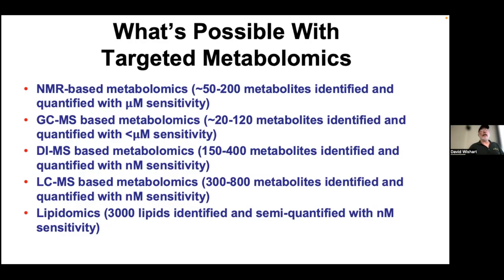In NMR-based metabolomics, you can identify between 50 to 200 components. GC-MS: 20 to 120. Direct injection or direct infusion mass spec: 150 to 400 compounds. LC-MS-based methods: 300 to 800. Lipidomics: up to maybe 3,000 compounds can be identified and semi-quantified. The sensitivity range is micromolar to nanomolar. NMR is the least sensitive; MS is the most sensitive, getting down to nanomolar sensitivity.